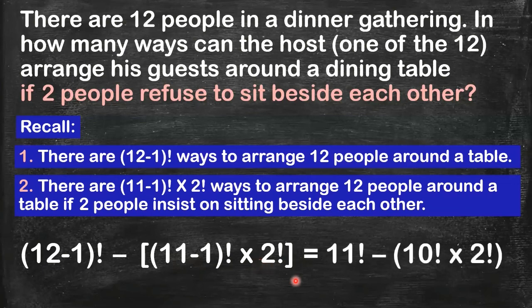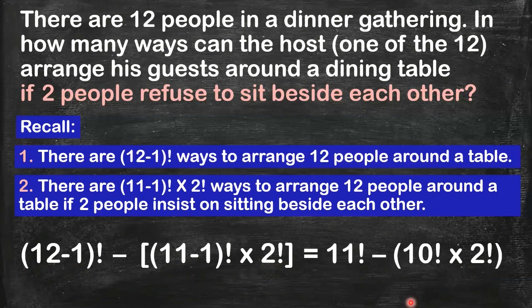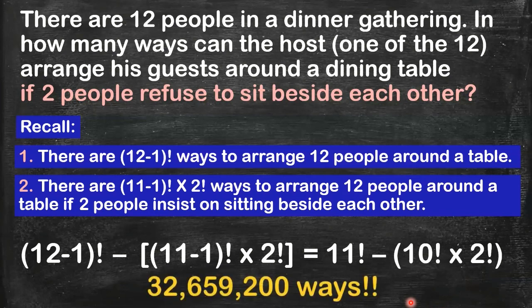So simplifying, we have 11 factorial minus 10 factorial times 2 factorial. The 11 factorial comes from the total arrangements, then we subtract 10 factorial — since 11 minus 1 is 10 — times 2 factorial, which is simply 2. Use your calculator and please verify this numerical value.